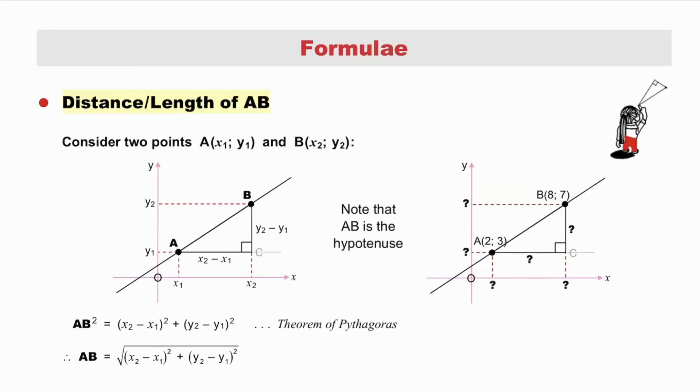We return to the original slide, and we can now understand why the horizontal length AC is x2 minus x1, and the vertical length BC is y2 minus y1. Applying the theorem of Pythagoras, the square of AB therefore equals the sum of the squares of (x2 minus x1) and (y2 minus y1), thus this formula. Therefore, AB is the square root of the sum of the squares of the difference in the x's and the difference in the y's.